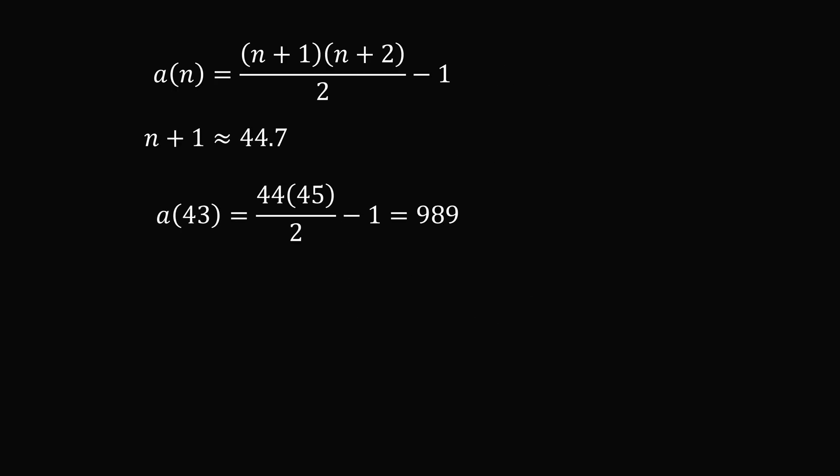So a(43) = 44 × 45 / 2 - 1, which equals 989. Then a(44) = 45 × 46 / 2 - 1, and that's equal to 1034.